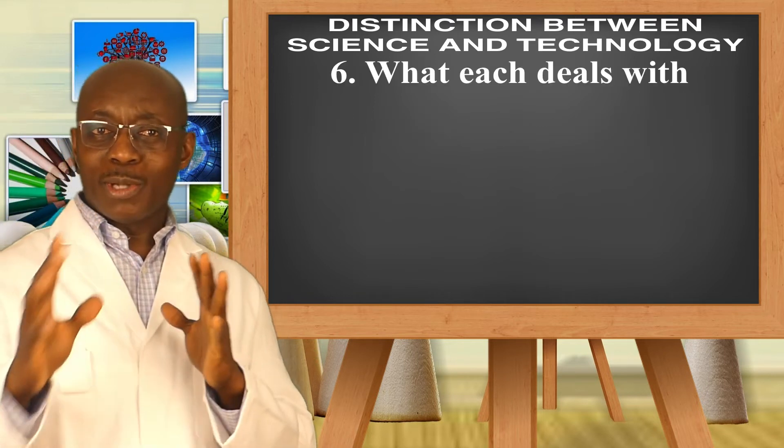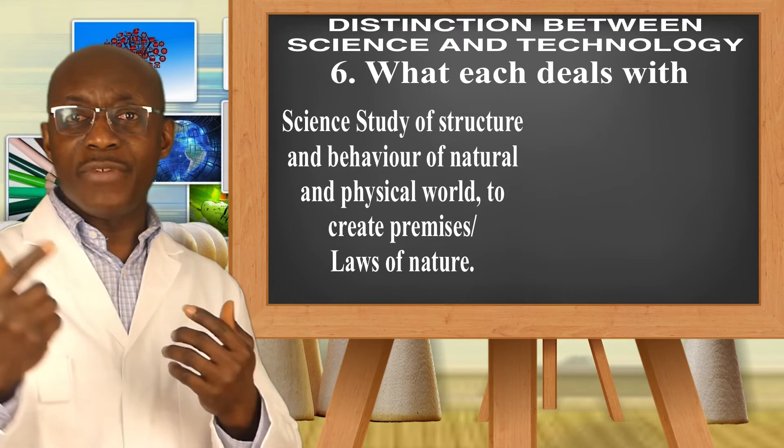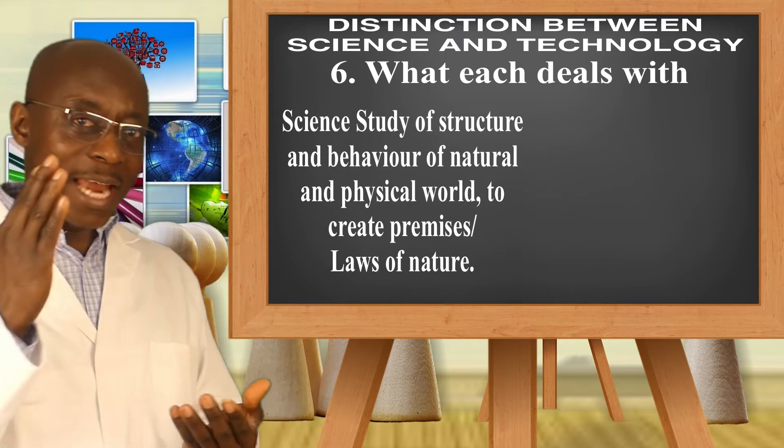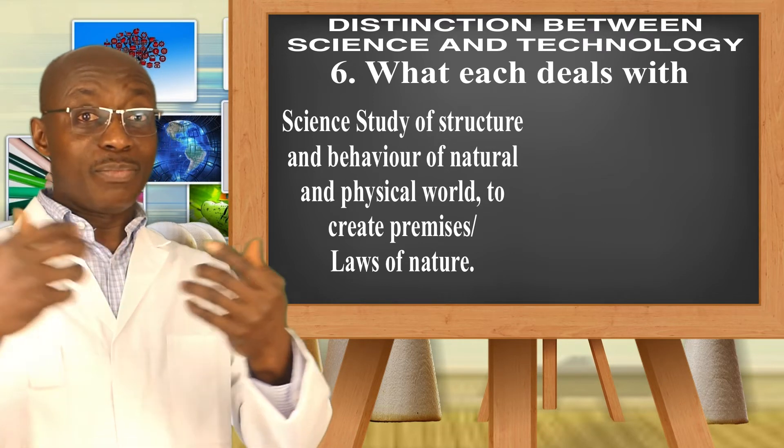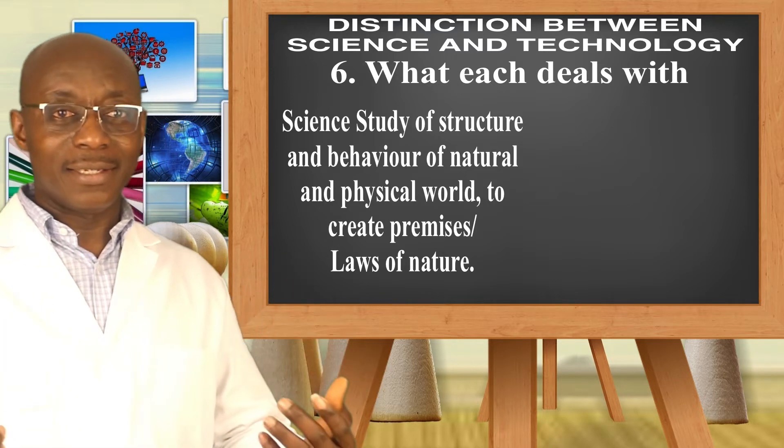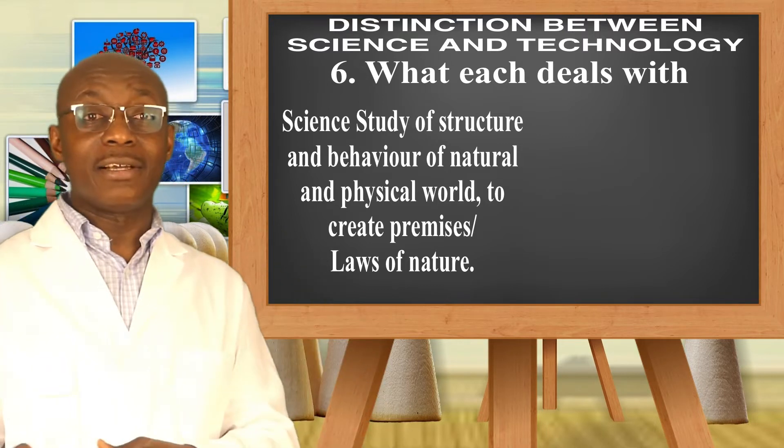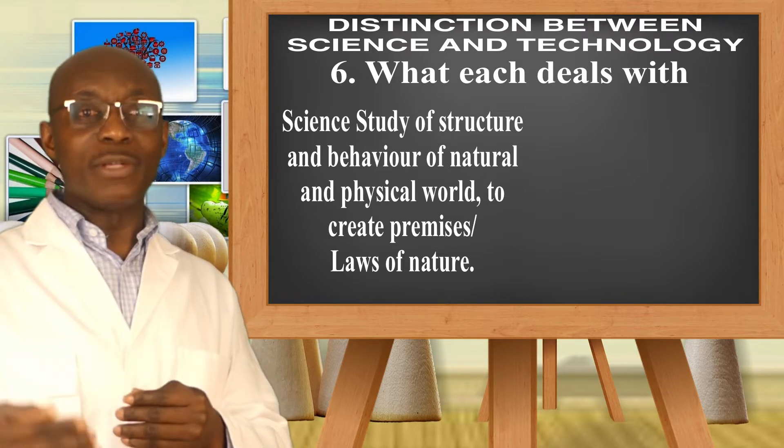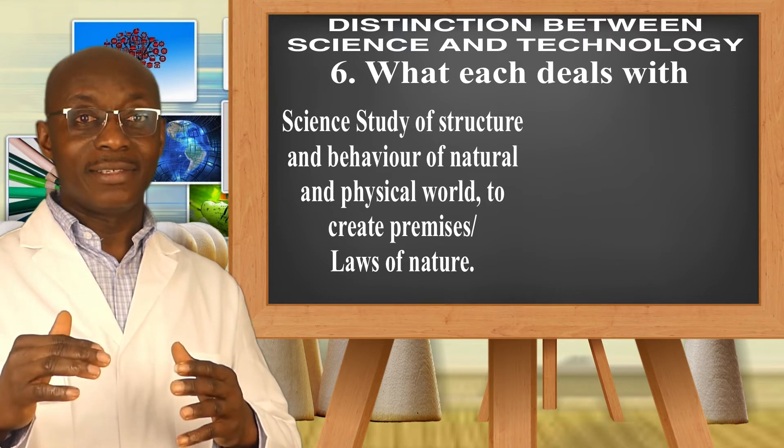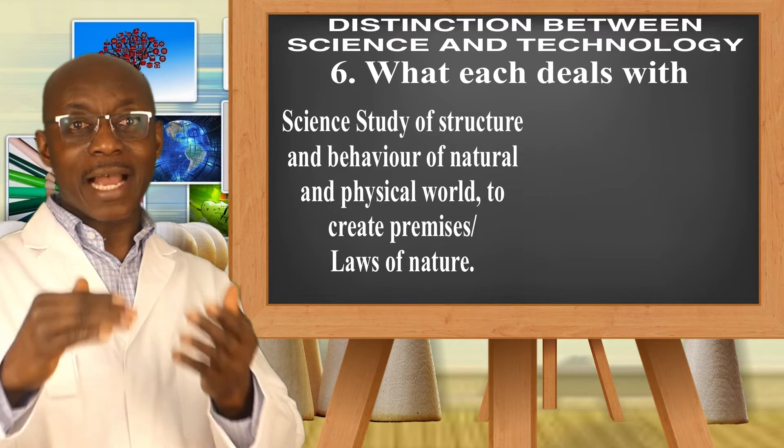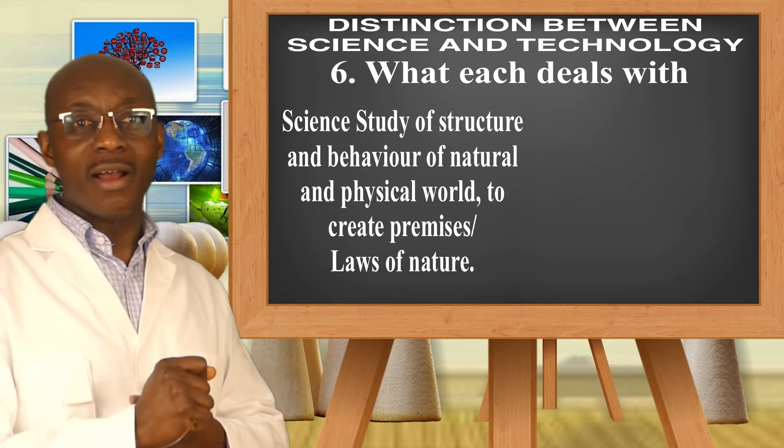Point number six. We're going to talk about what science and technology deal with. If you take science, science deals with the study of the structure and behavior of natural and physical world. And out of that, it creates the laws of nature. Science. Out of science, certain premises are set or the laws of nature are set. So out of science that we get to know that, okay, this can be that or that can be that. For instance, how did we get to know that our voice can be transformed into sound waves, which also can be transformed into electrical waves, and out of that phones were invented. It was through science. So as we say, science deals with the structure and behavior of the natural and physical world to create laws of nature or to create premises.